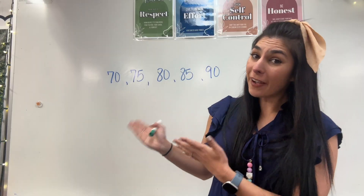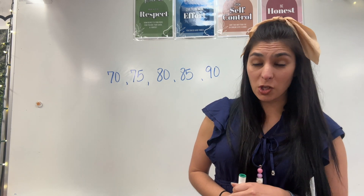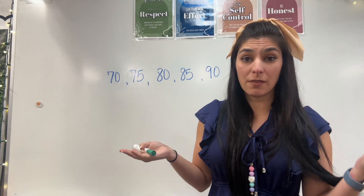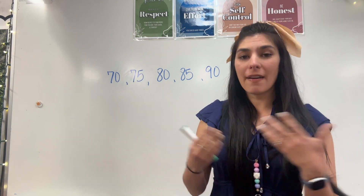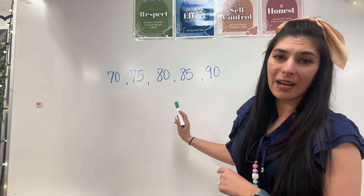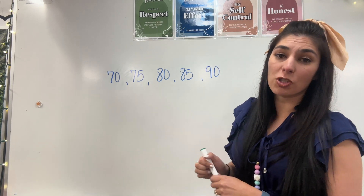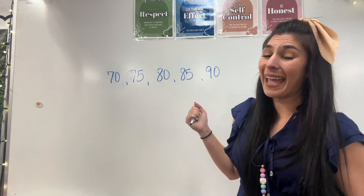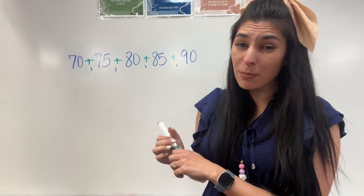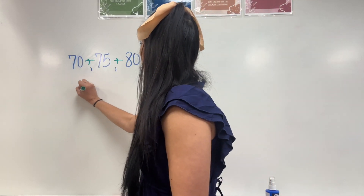Let me show you what I'm talking about. Example one. Five students took a test and these are their scores. We're going to find the mean absolute deviation of how they did on the test. So step one, I'm going to find the mean or the average of my numbers, starting by adding them all together. When I add all of these numbers up, I'm going to get 400.